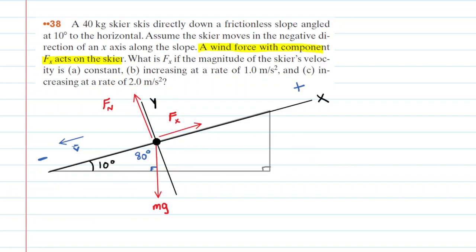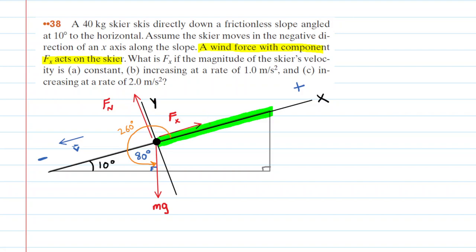Now comes the reason we found that angle. When measuring angles, we want to measure them relative to the positive direction of the x-axis. For the gravitational force pointing straight down, we measure from the positive x-axis counterclockwise all the way to mg. We travel 180 degrees to reach the negative x-axis, then add 80 more degrees to reach mg — giving an angle of 260 degrees for the gravitational force. For the normal force, the angle from the positive x-axis is simply 90 degrees.